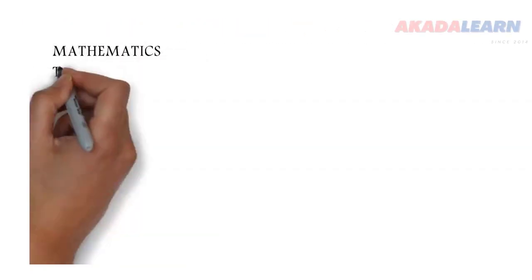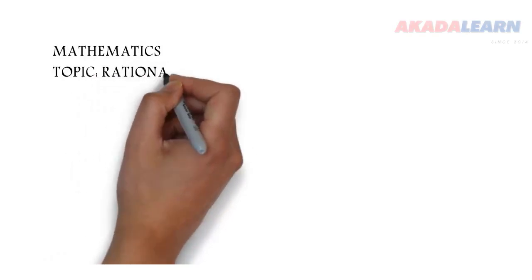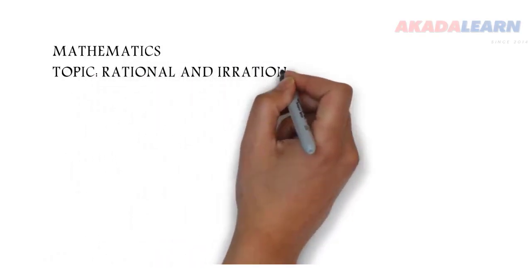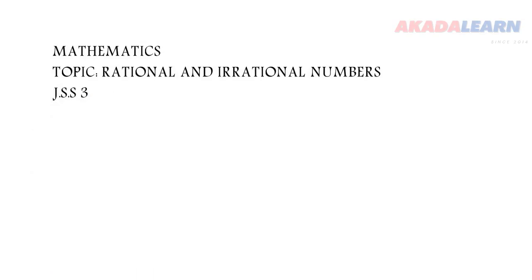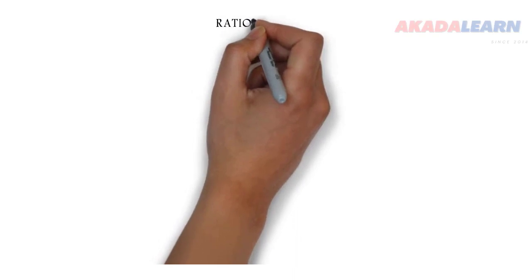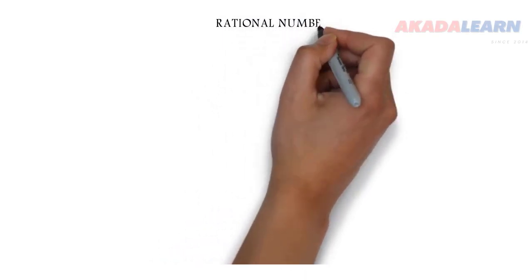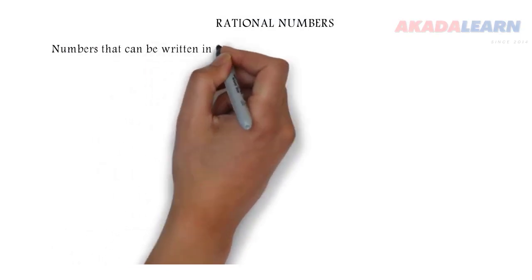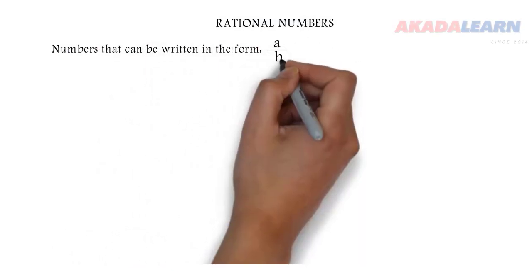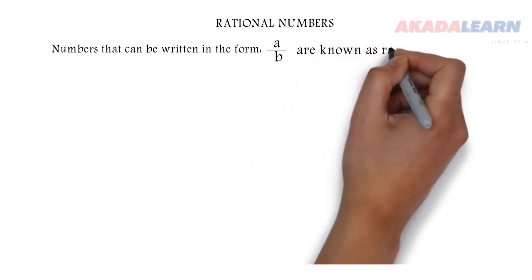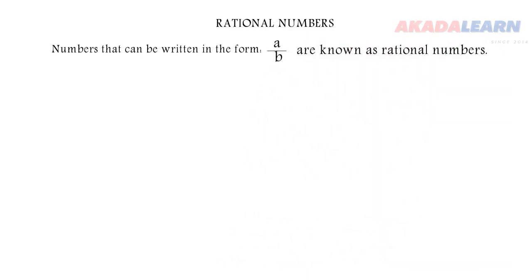You are welcome to class. Today we are going to be seeing how to write a recurring decimal as a fraction and how to find the square root of a number. So first let's see the definition of a rational number. Simply a rational number is a number that can be written in form of a fraction, let's say a over b, and we should know that b cannot be zero.